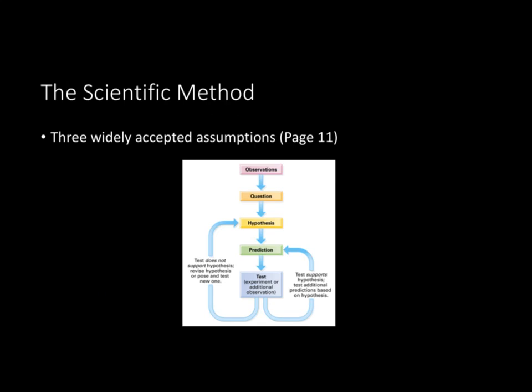Also, the model of the scientific method is widely accepted. It basically reads: observation leads to questions, to a hypothesis, to a prediction, to a test, to results, and then based on those results, you can reinterpret your prediction and look back to reinterpret your hypothesis.